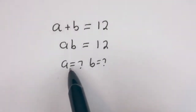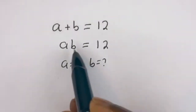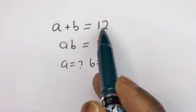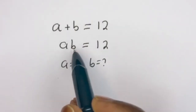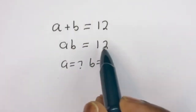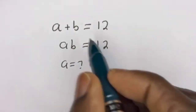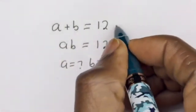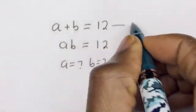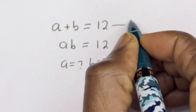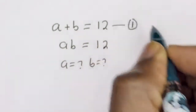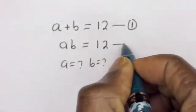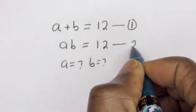Hello. How to solve for a and b in this equation: a plus b is equal to 12 — let's call this equation 1 — and a times b is equal to 12 — let's call this equation 2.